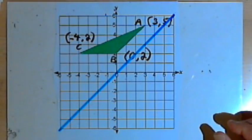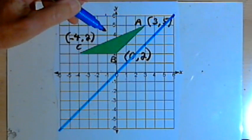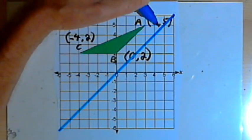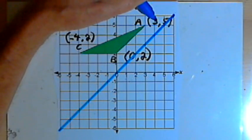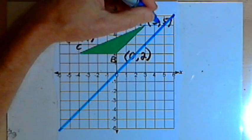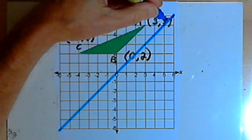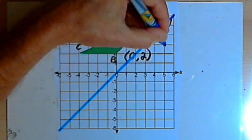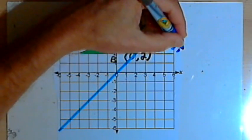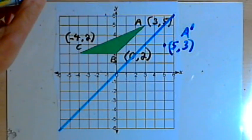Now, when you reflect an image across that x equals y diagonal, all you have to do is take the coordinates and reverse them. So in other words, if point A is at 3, 5, point A prime is going to be at 5, 3. That would be right here. That's 5, 3, and that's going to be A prime.